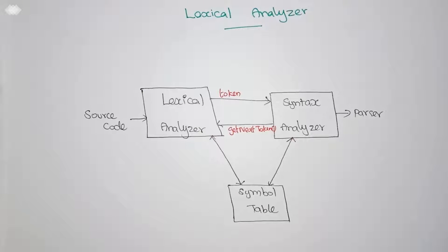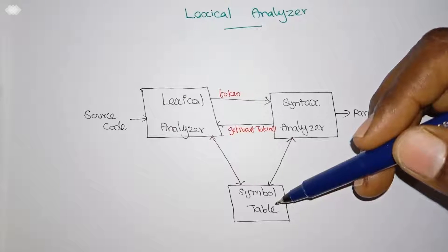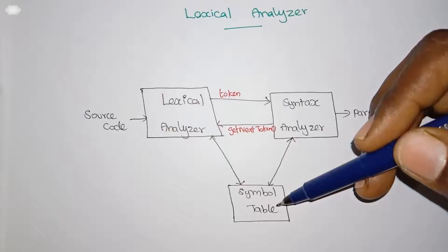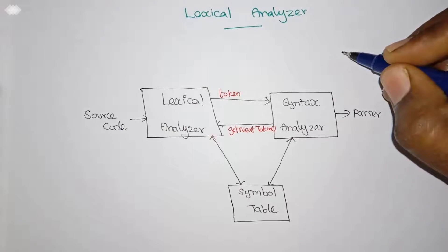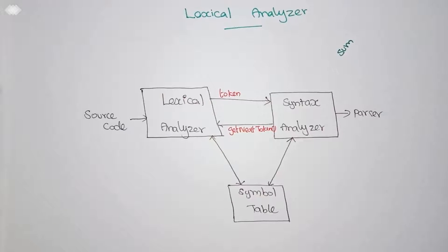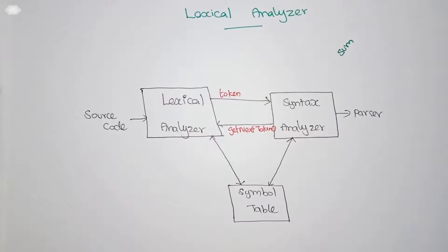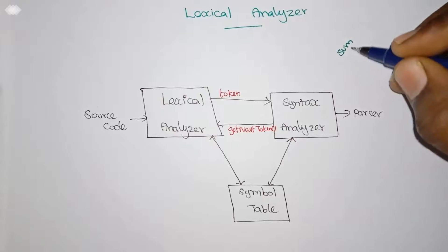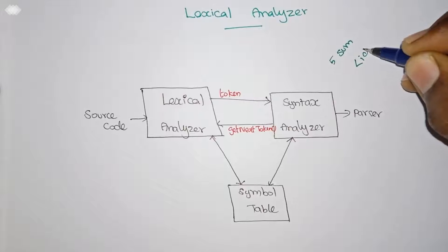The lexical analyzer is accompanied by a symbol table. Whenever it reads an identifier, it checks whether that identifier already exists in the symbol table. For example, when reading an identifier like 'sum', it checks whether 'sum' has already been encountered in the program. It looks in the symbol table to see if an entry for 'sum' has already been made, and if so, it returns that index position.